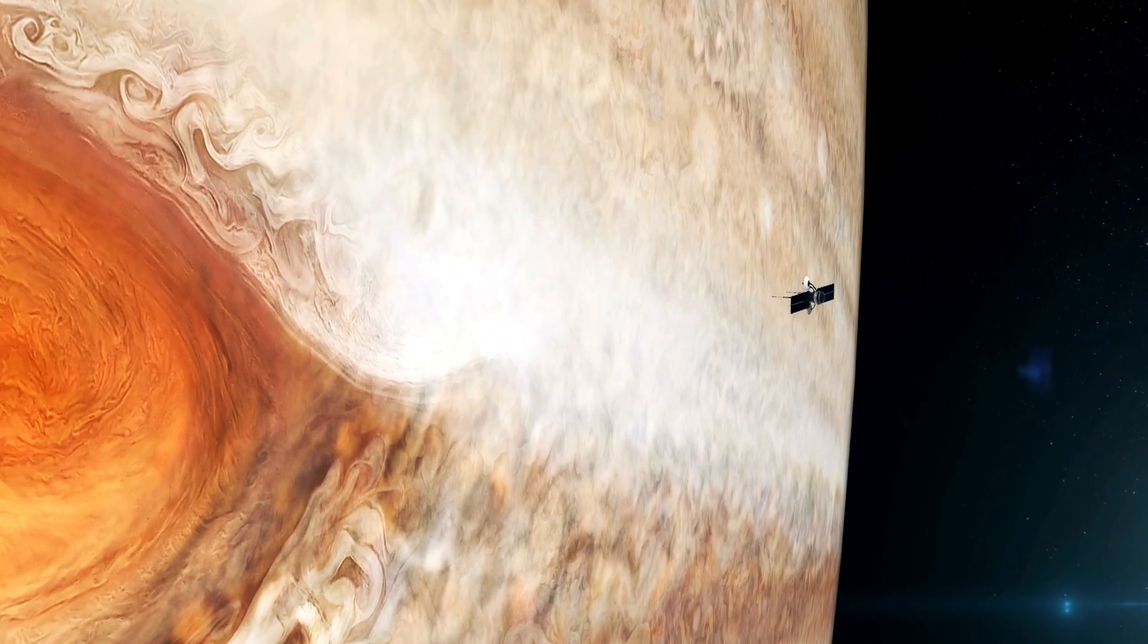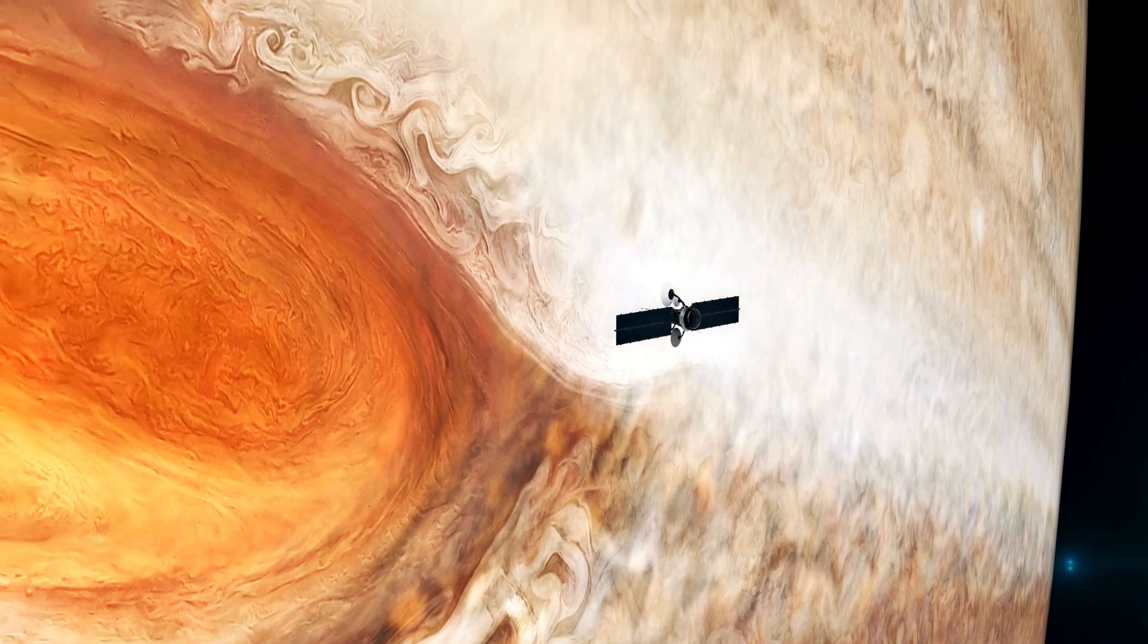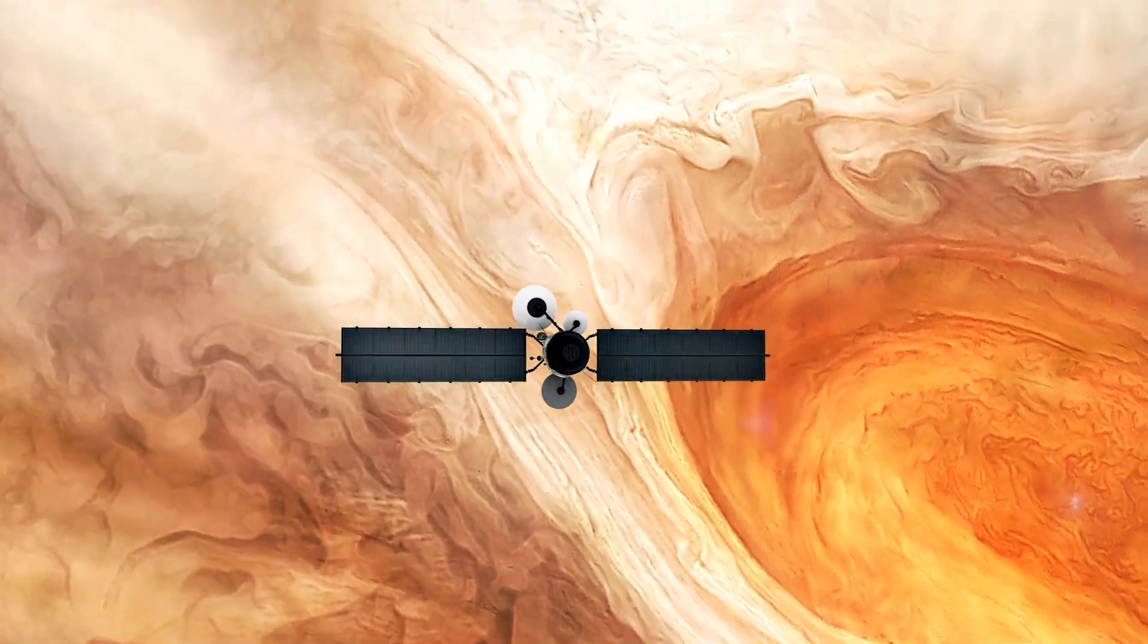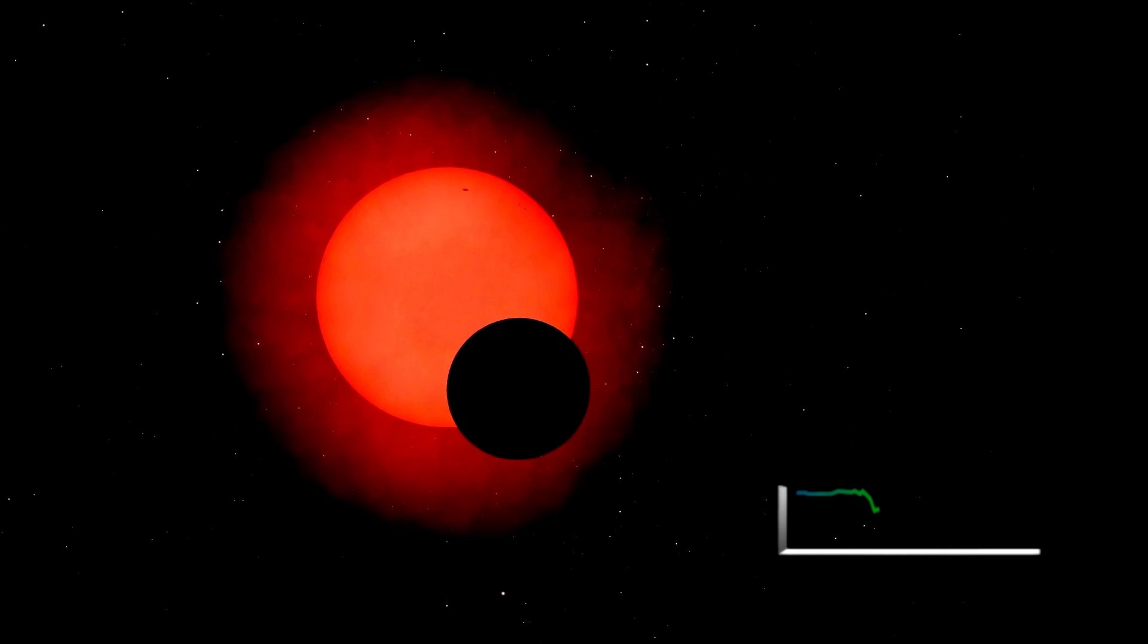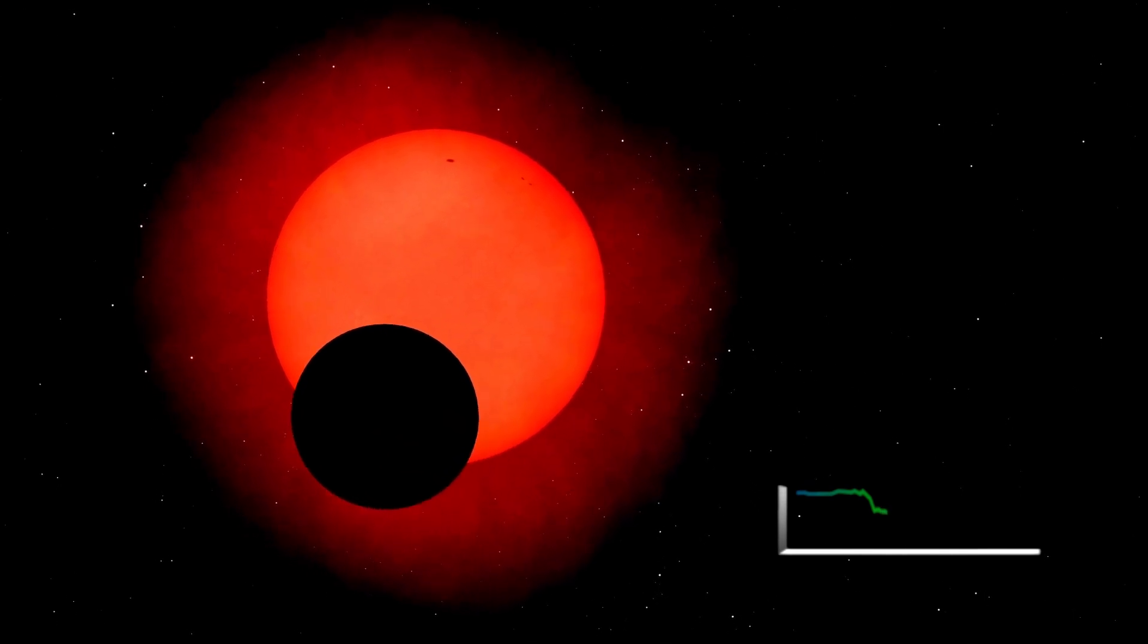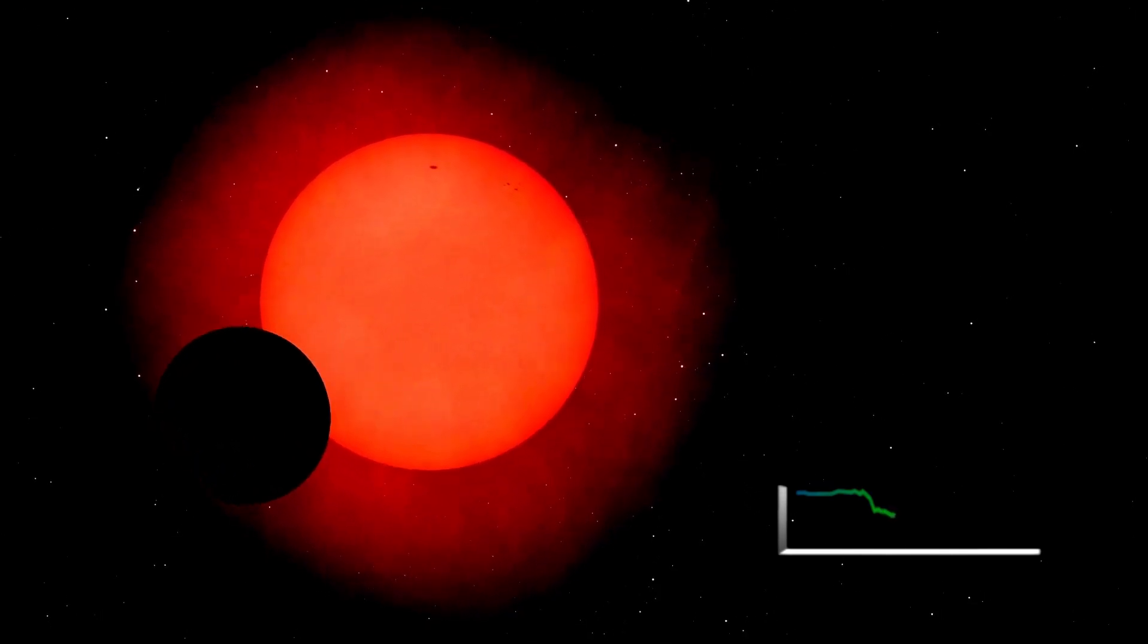This lower temperature also means that Betelgeuse emits much less energy per unit of surface area than the sun, which is why it appears much dimmer despite being one of the largest stars known to us. It's like the giant who's happy to be low-key and doesn't need to show off their size to feel important.